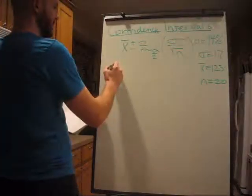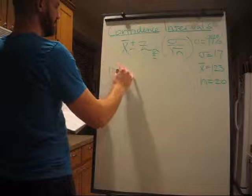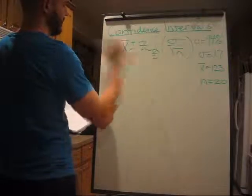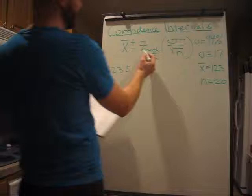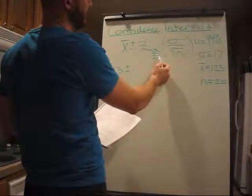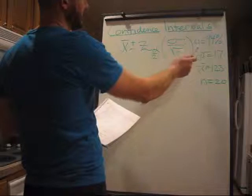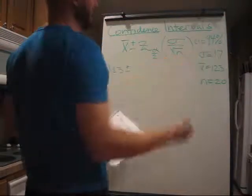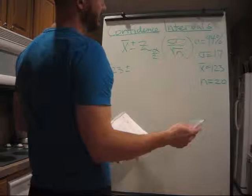Okay, so our equation is going to look like this. 123 plus or minus the z-score of alpha over 2. So we have a confidence level of 94%. So 1